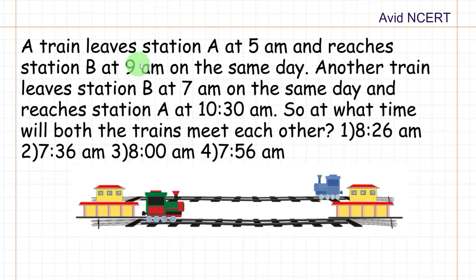From the first sentence, train leaves station A at 5 a.m. and reaches station B at 9 a.m. So let this be station A and let this be station B, and let this be train A and let this be train B. So train A starts from 5 a.m. and reaches station B by 9 a.m., and train B starts at 7 a.m. and reaches by 10:30 a.m.